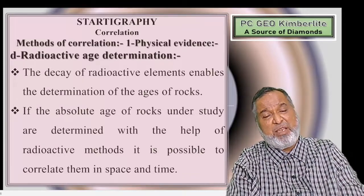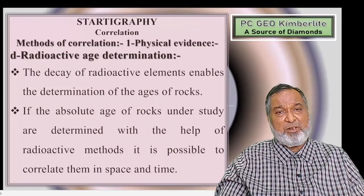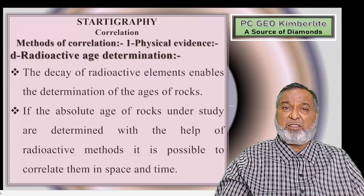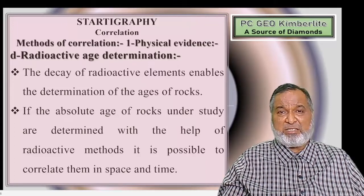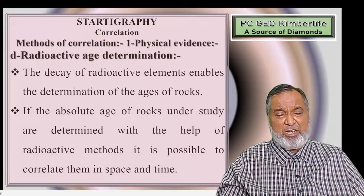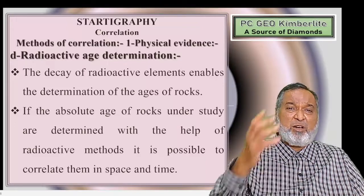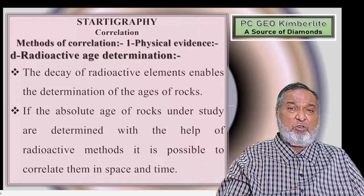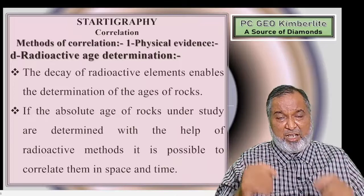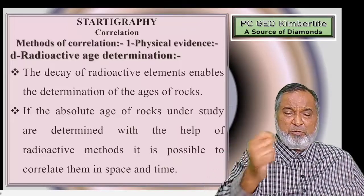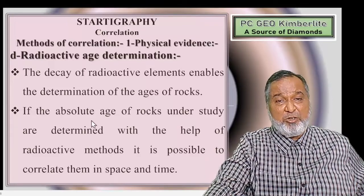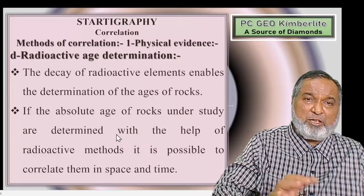For age determination, radioactive age determination is very important. Each rock may contain radioactive elements that continuously emit alpha, beta, and gamma rays. Using radioactive decay — carbon dating, oxygen dating, strontium, or uranium-thorium dating — we can determine the age of the rock. In cases where no fossil deposits are present, radiometric dating is used; if fossils are present, both the fossil evidence and radiometric dating are combined to determine the absolute age of the rock, which is the best way to make correlation in space and time.